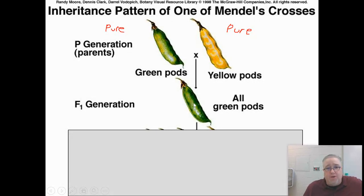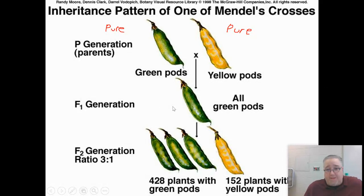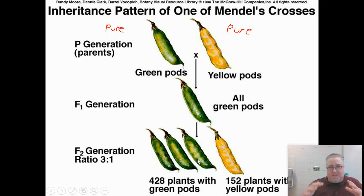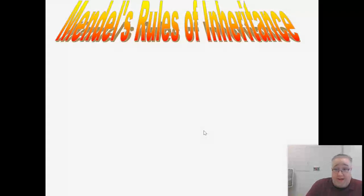So he had what he called the parent generation — the two pure plants — and then the F1 generation, which is the first generation of offspring. Mendel wondered: how come every time I breed these two pure plants, I never get yellow? Then he took two of these F1 green plants and crossed them together. He figured crossing two greens would give all green offspring, but this was also weird — he got mostly green but not all green. He got about 75% green and about 25% yellow. Eventually he came up with what he called Mendel's rules of inheritance.